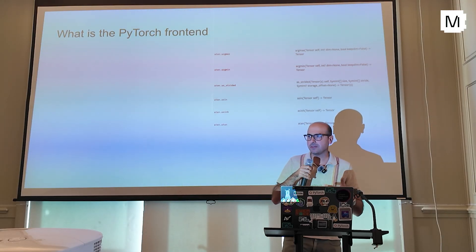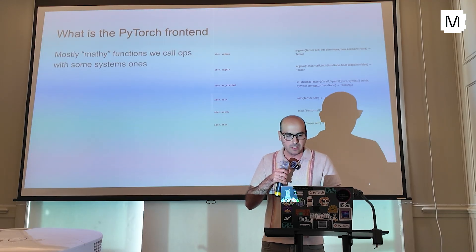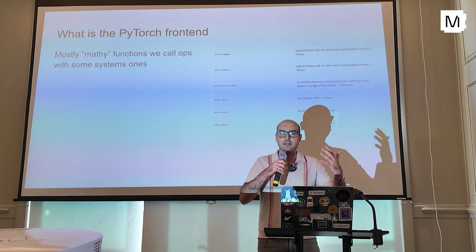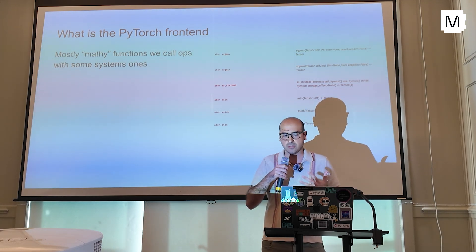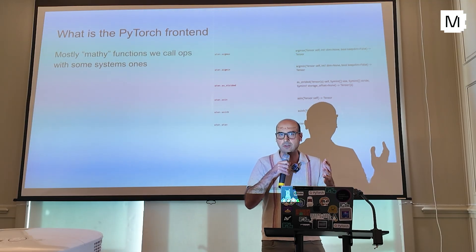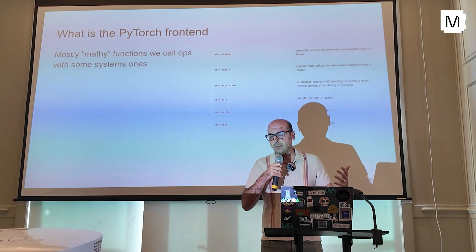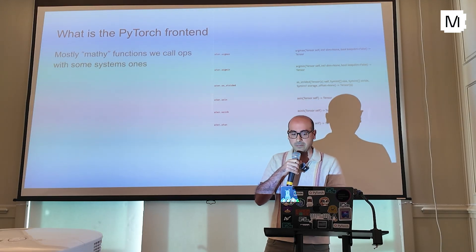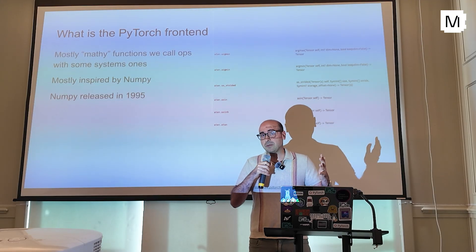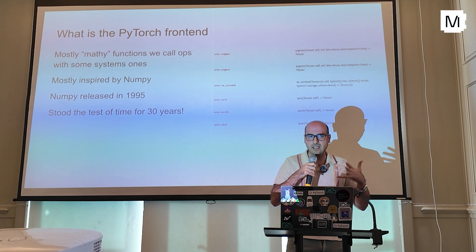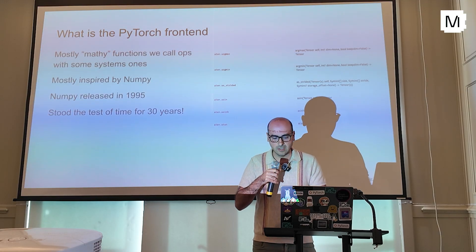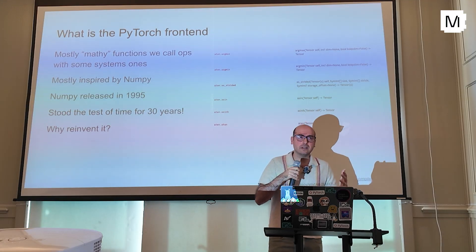Similarly, I want to talk about what this looks like for deep learning. Obviously Matmul is the most important algorithm. In PyTorch, we have a list of mathy functions we call ops — things like argmax, sine, cosine — whose definitions do not change over time. There's also one systemy API called as_strided, which is how PyTorch reads tensors in memory to get performance. This API was mostly inspired by NumPy, released in 1995. We basically have the same high-level APIs for linear algebra that have stood the test of time for at least 30 years. So my claim is: why do we need to reinvent this? I'd argue we do not — we should reinvent other things.